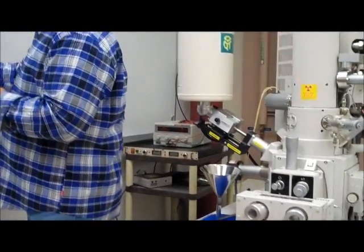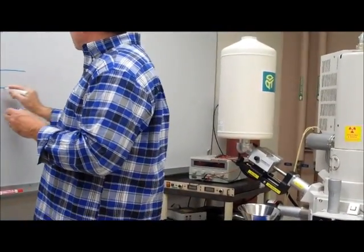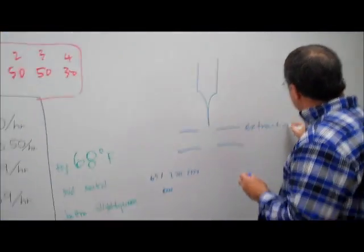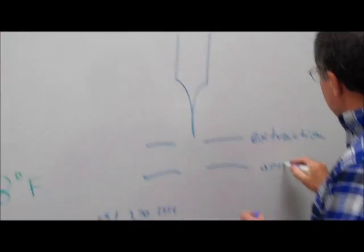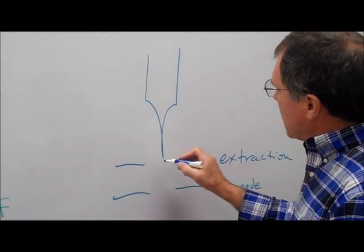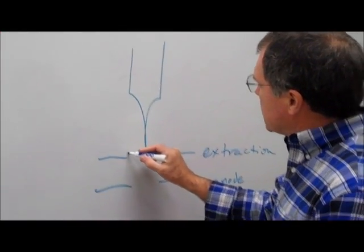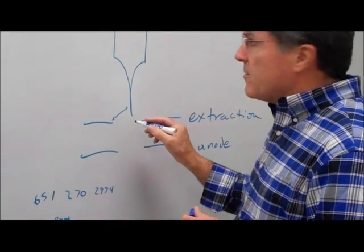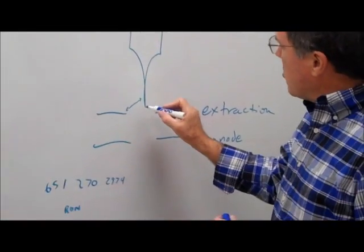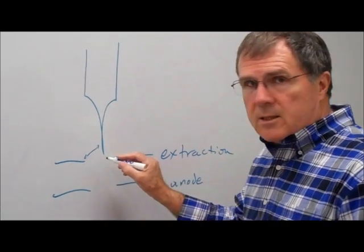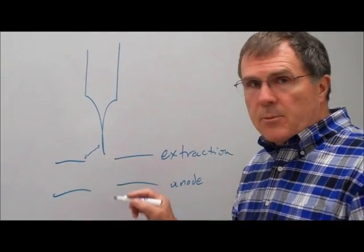And there are two plates. One of them is called the extraction plate, and the other one is called the anode, and the way it works is that between here and here is a very high voltage potential, and so what it does is it sucks electrons off of this tip.